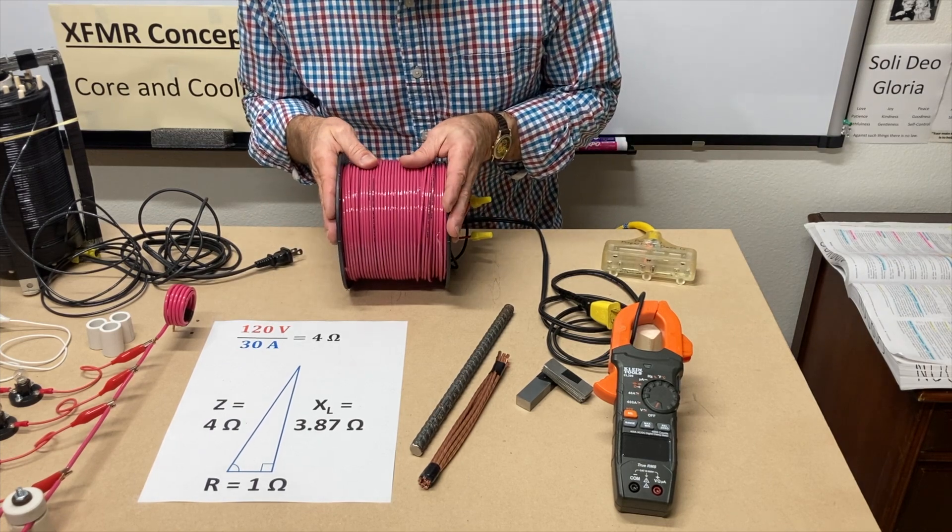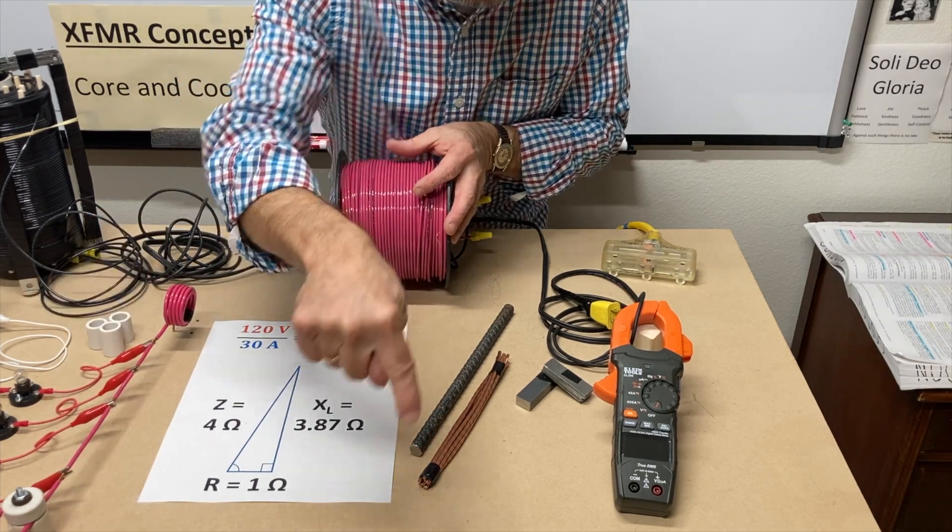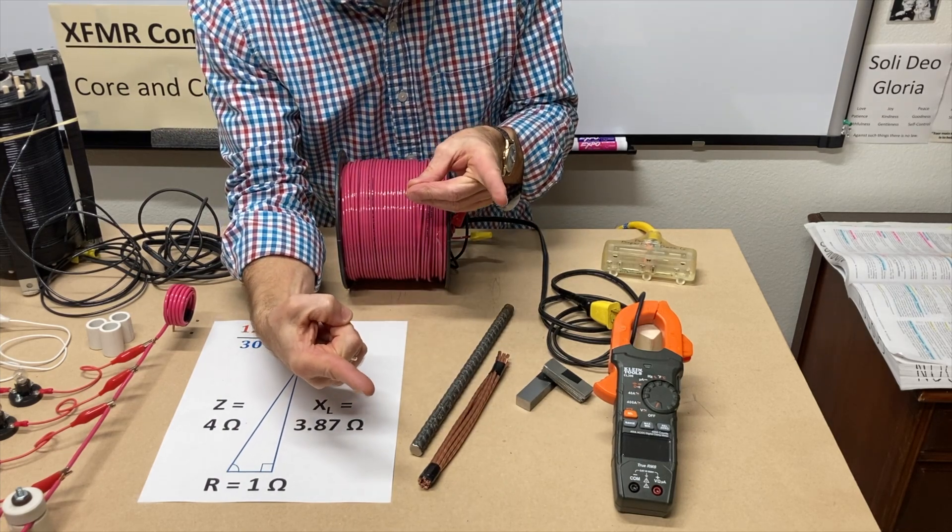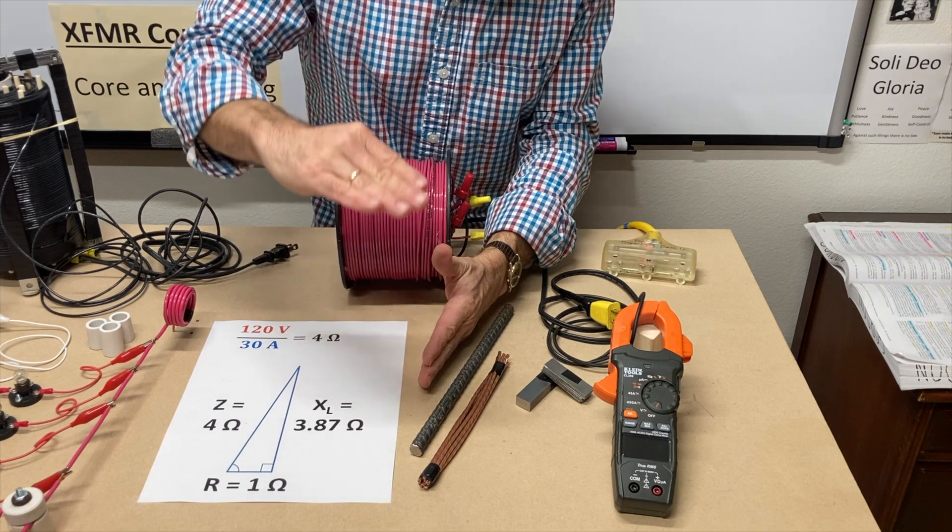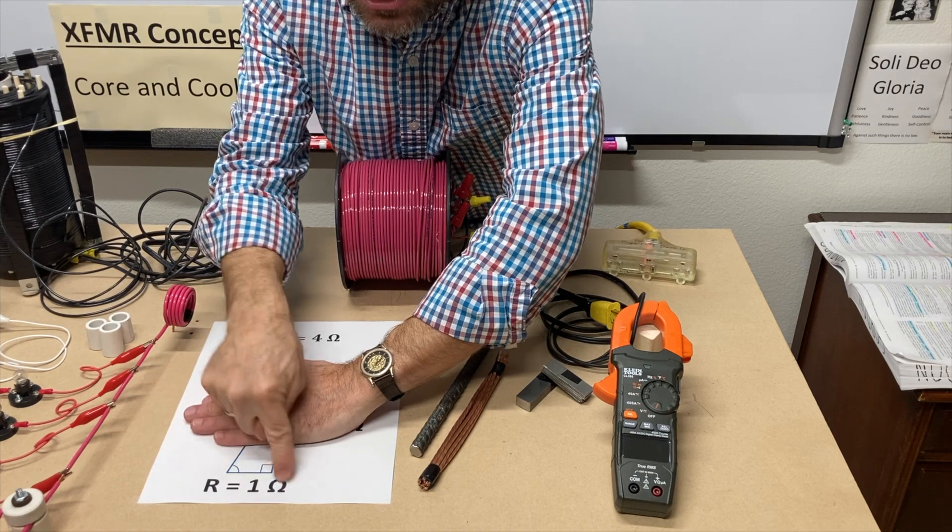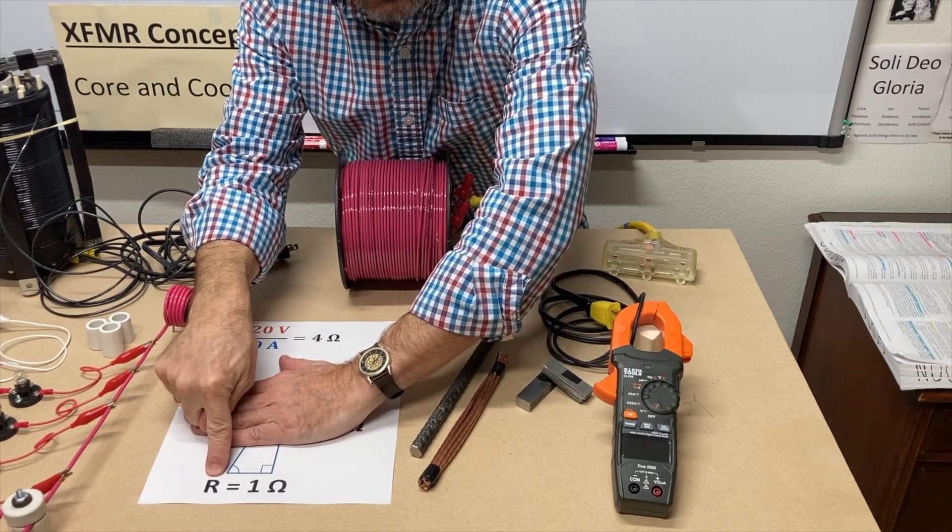I took 500 feet of number 12 wire, stretched it out across a big lawn, applied 120 volts across it, and we saw the current, more than 100 amps, flow on that. And that's because we were largely just dealing with the resistance of the wire.